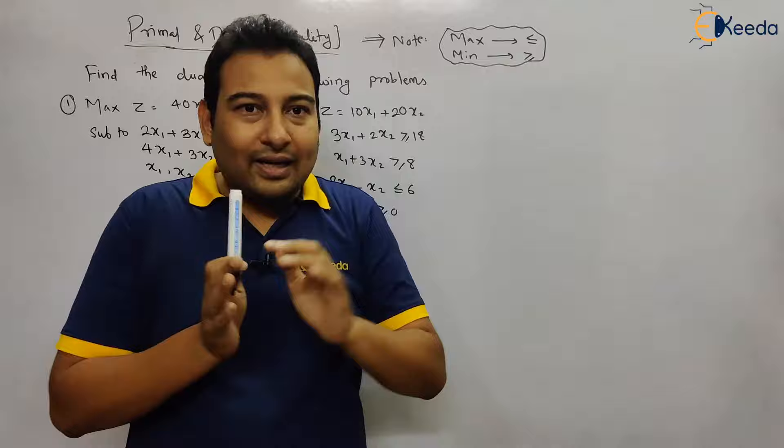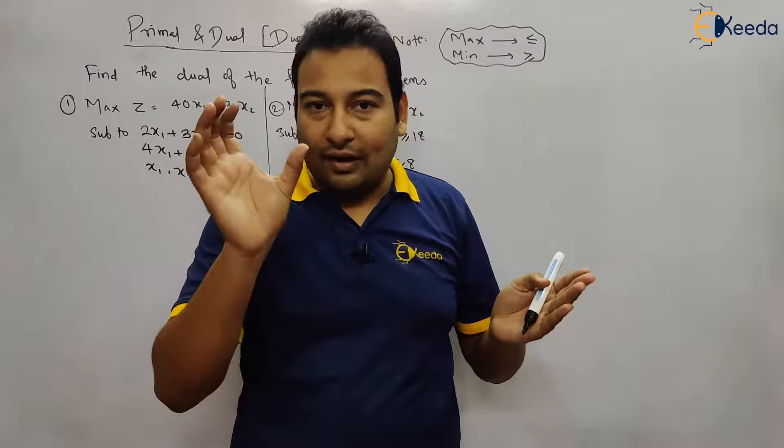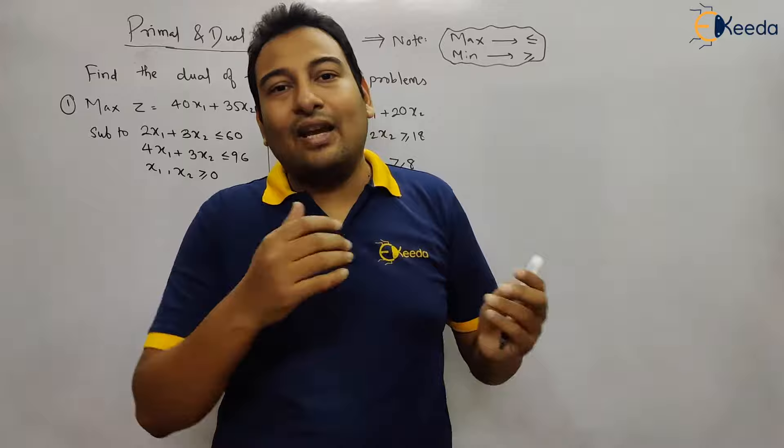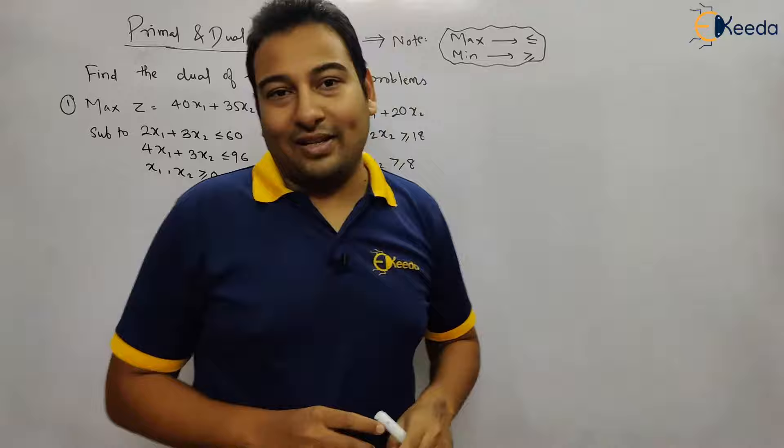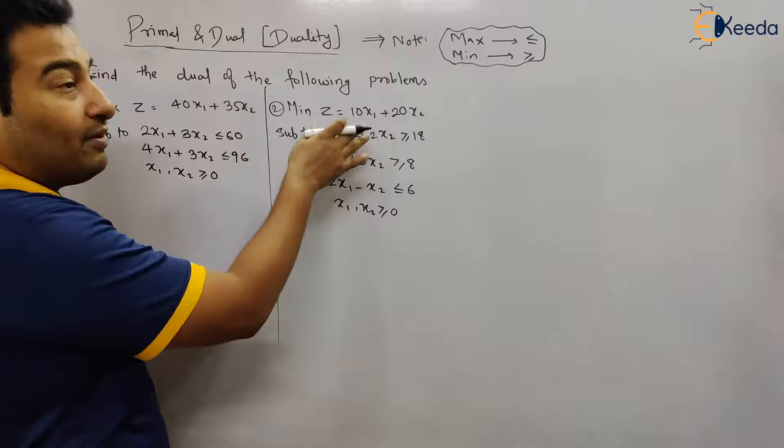That means if a problem is minimized, whatever is the given problem is the primal, and the solution will be the dual. If primal is maximized, its dual will be minimized, and vice versa — if a primal is minimized, its dual will be maximized. So let us start with the problem. Two problems are given in front of us; the question is to form the dual, find the dual of the following problem. Note that finding the dual and the dual simplex method are different.